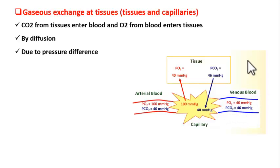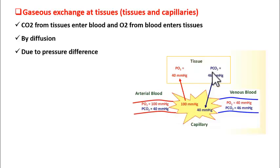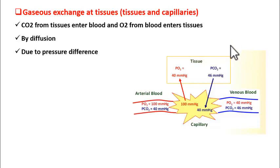This carbon dioxide is again taken to the lungs for the next round of exchange with oxygen. Arterial blood — blood coming from the lungs — is rich with oxygen and poor in carbon dioxide. It exchanges oxygen for carbon dioxide in the tissues. Now the blood is rich with carbon dioxide and is called venous blood. This venous blood goes to the lungs again for oxygenation, comes out as arterial blood, and goes to the tissues again. This cycle continues.